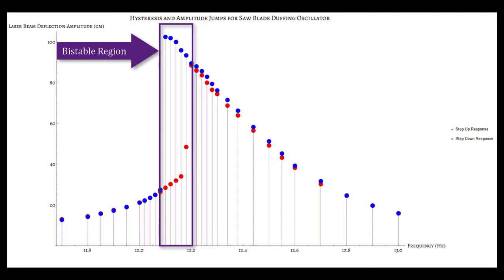Experimental data fits the qualitative predictions of the theory quite well in the exhibition of the bistable region, as well as amplitude jumps. You may have noticed that the x-axis here is in terms of Hz, frequency, rather than angular frequency squared. That is of no concern, however, as switching between the two does not significantly affect the shape of the curve.